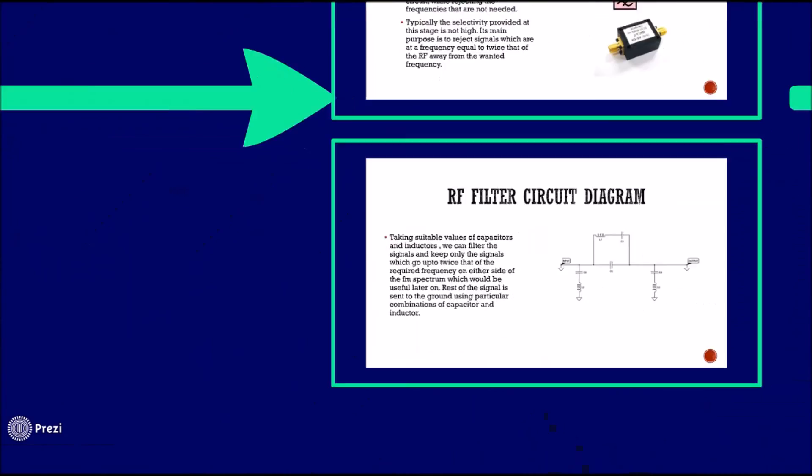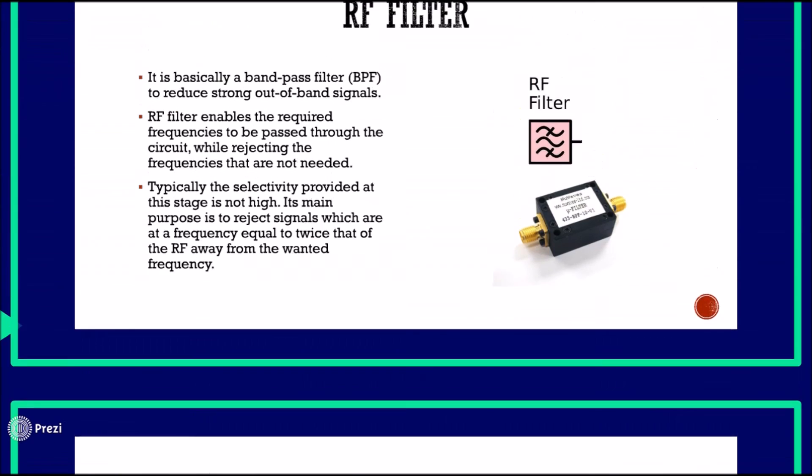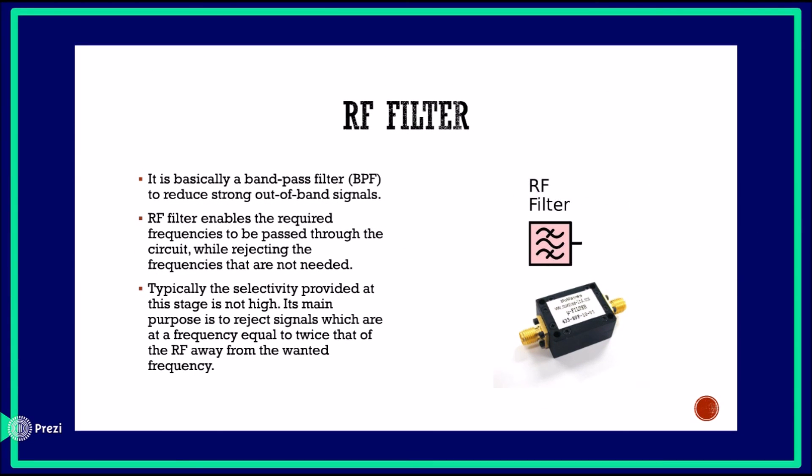The RF filter is basically a bandpass filter to reduce strong out-of-band signals. It enables the required frequencies to be passed through the circuit while rejecting the frequencies that are not needed. Typically, the selectivity provided at this stage is not high. Its main purpose is to reject signals which are at a frequency equal to twice that of the RF away from the wanted frequency.